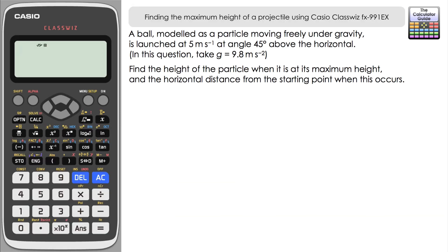A ball modelled as a particle moving freely under gravity is launched at 5 metres per second at an angle of 45 degrees above the horizontal. In this question we take gravity as 9.8 metres per second squared. We have to find the height of the particle when it's at its maximum height and the distance from the starting point when this occurs.